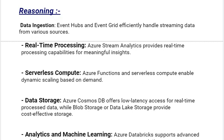Now moving towards the reasoning section. For data ingestion, Event Hubs and Event Grid efficiently handle streaming data from various sources. For real-time processing, Azure Stream Analytics provides real-time processing capabilities for meaningful insights. Azure Functions and serverless compute enable dynamic scaling based on demand. Azure Cosmos DB offers low-latency access for real-time processed data, while Blob Storage or Data Lake Storage provide cost-effective storage.